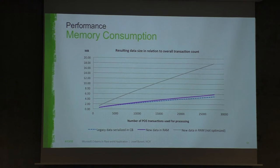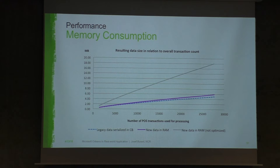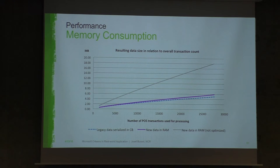The memory consumption is the problem you'll likely face when holding big data in memory — not the CPU. The CPU without serialization and deserialization is so fast that in our demo running about 100 sites in a pilot state, CPU utilization is just 0.2 — basically doing nothing. It's consuming a little memory, of course.